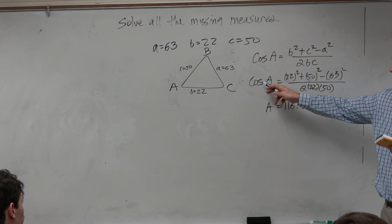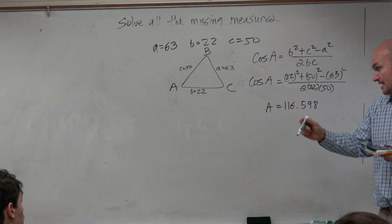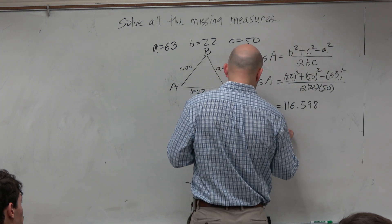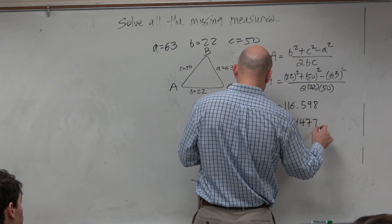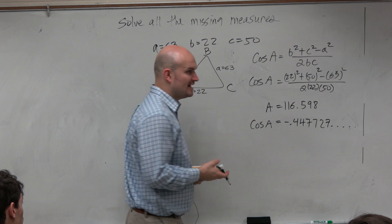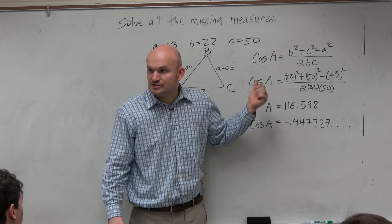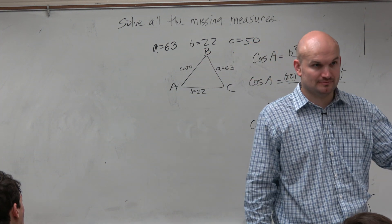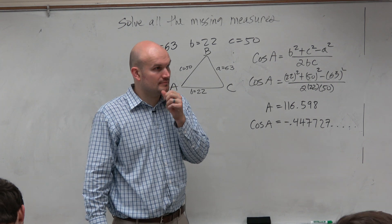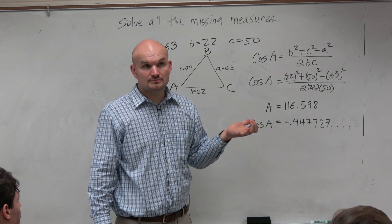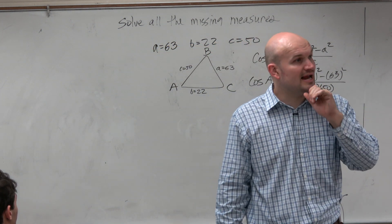So when I'm doing this now, when I solve for A, I get this. Make sure. Remember, if you just do this information, you're solving for the cosine of A. You should get the cosine of A is equal to a negative 0.447727 dot dot dot. But again, remember, you're not solving for the cosine of A. You're solving for A. So you've got to take the cosine inverse of that information. Are we good? I'll walk around and show you guys.